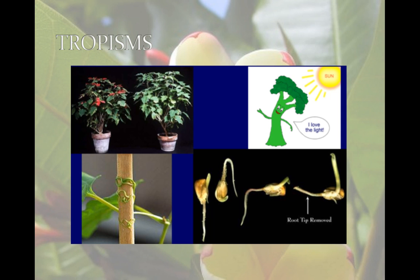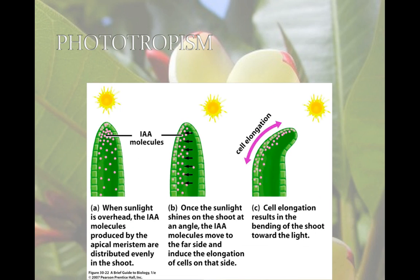Tropisms are a growth response that makes a plant grow toward or away from a stimulus. Phototropism is a response to light. The shoot tips contain a protein pigment that detects light and passes the message to molecules that affect auxin transport.